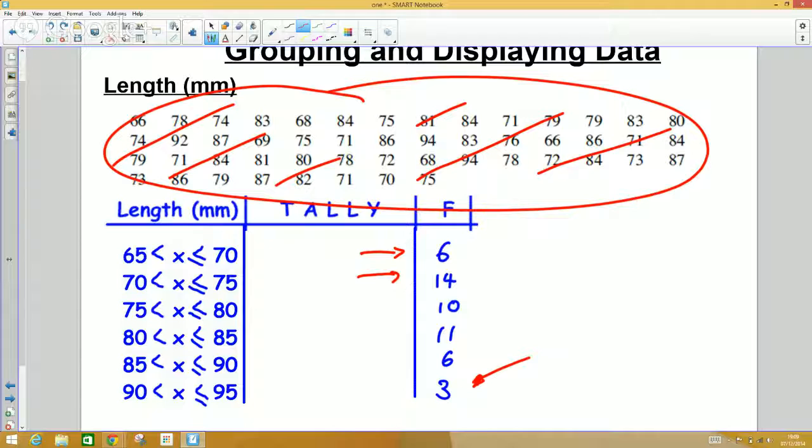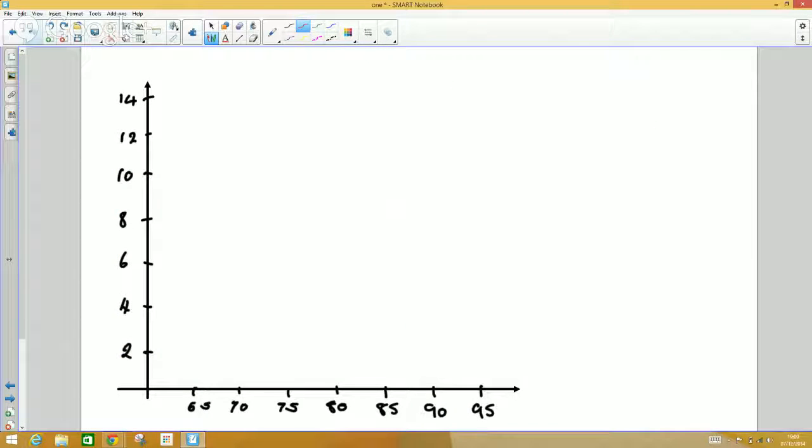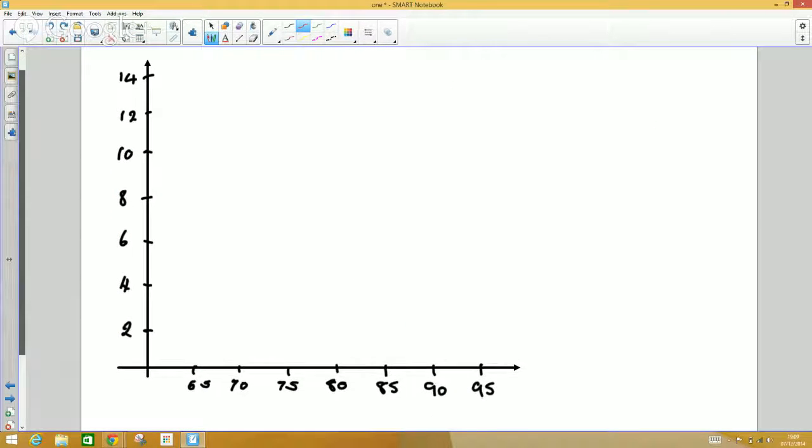The best way to do this is a grouped frequency bar chart. We can see that our bar chart on the x-axis must go between 65 and 95, and on the y-axis it must go as high as 14. So there's my axis. Length in millimeters is always along the x-axis, and the frequency goes up the y-axis.